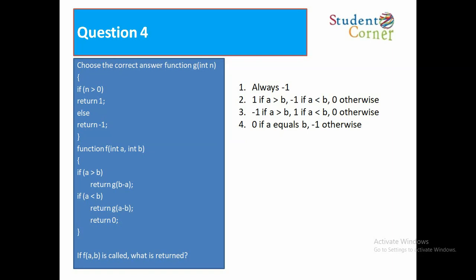Option 1: always minus b. Option 2: 1 if a greater than b, minus 1 if a less than b, 0 otherwise. Option 3: minus 1 if a greater than b, 1 if a less than b, 0 otherwise. Option 4: 0 if a equals b, minus 1 otherwise. The answer is 0 if a equals to b, minus 1 otherwise.